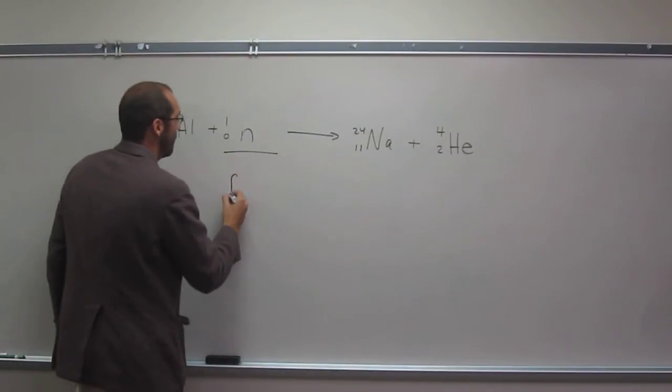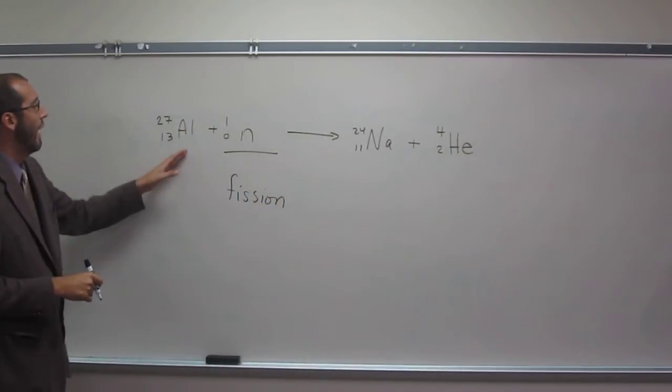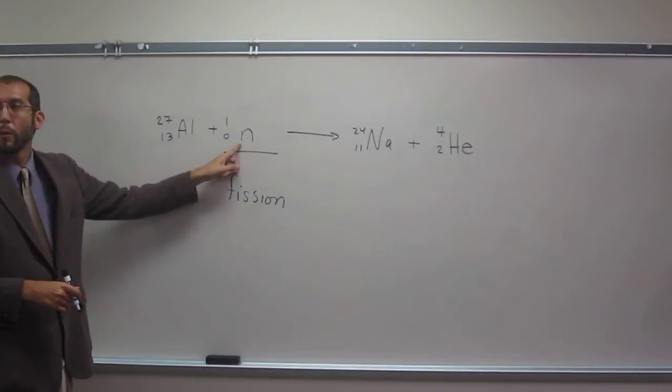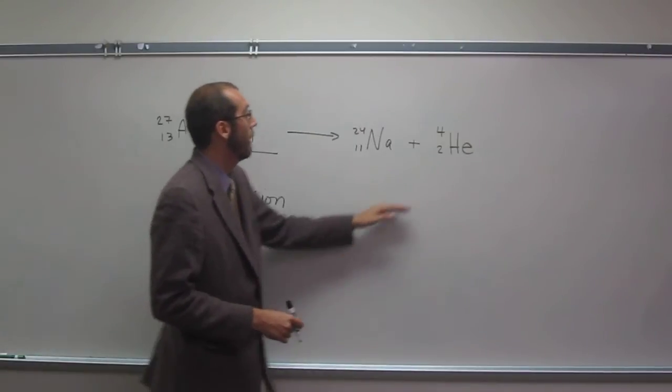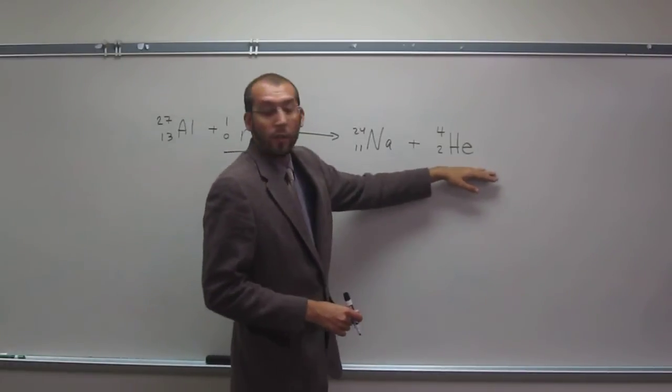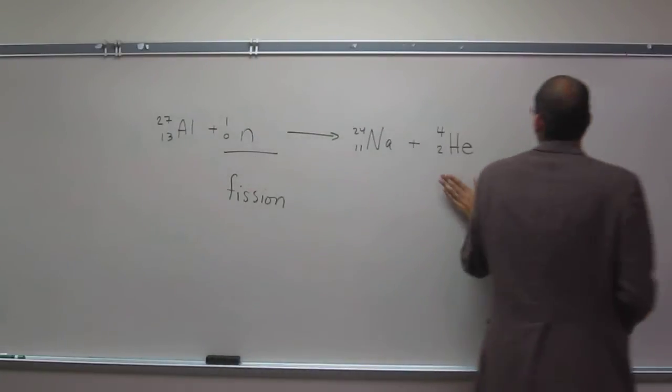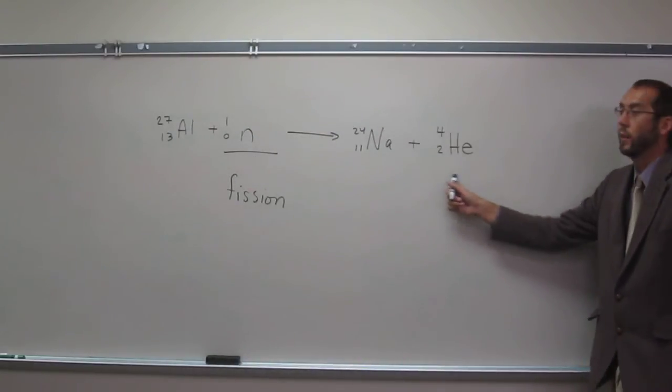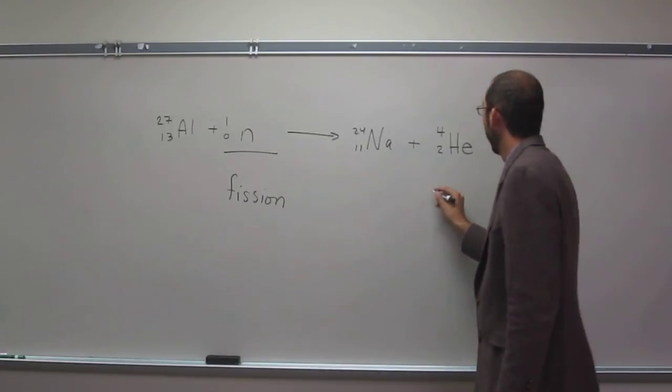So fission is when you have a heavy atom that's bombarded with a small particle and it's broken up. And here's another nuclear particle that we often see, a decay particle. Does anybody know what it's called? What type of particle? This is an alpha particle.